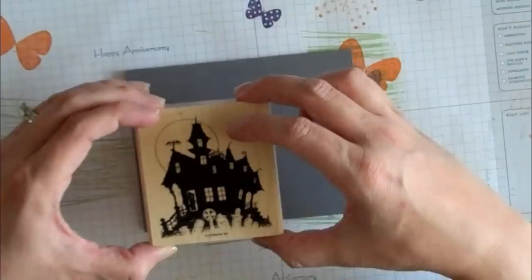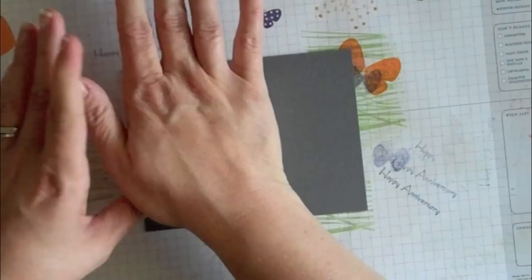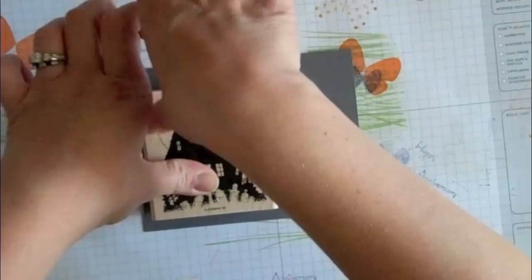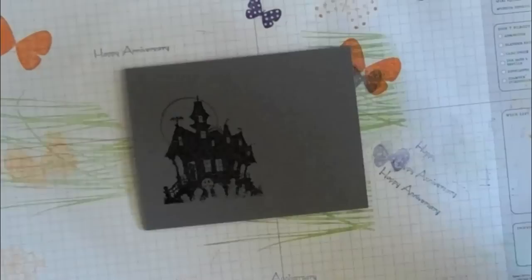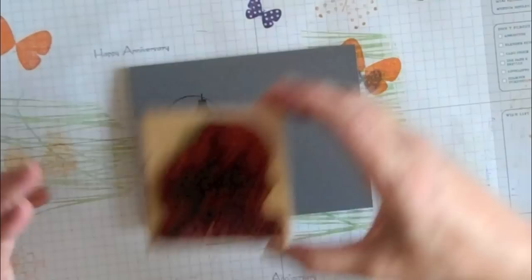Then go ahead and line your card up, and you're going to want to stamp it in the left-hand corner of your card. This is a thicker image, you want to make sure you get a good impression. I kind of like to push down on it. Don't push too hard though, because that moon is such a fine line. Then lift up. You can see I kind of got a little thick right there on my line, but that's okay.